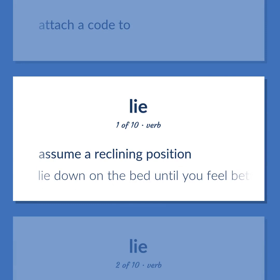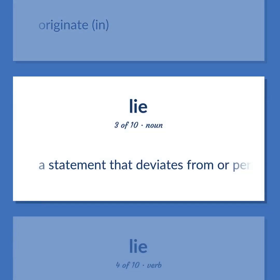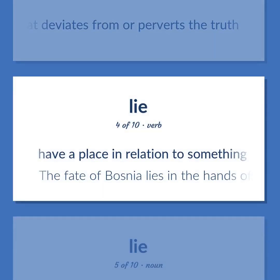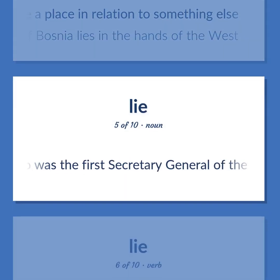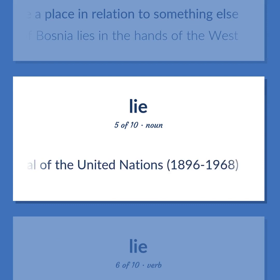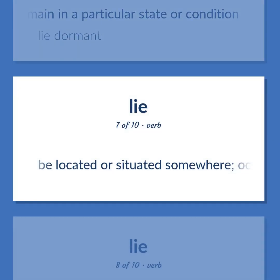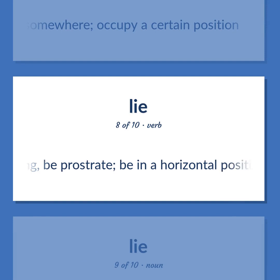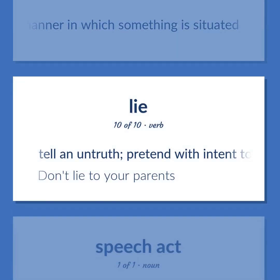Assume a reclining position. Lie down on the bed until you feel better. Originate in. A statement that deviates from or perverts the truth. Have a place in relation to something else. The fate of Bosnia lies in the hands of the West. Norwegian diplomat who was the first Secretary General of the United Nations, 1896–1968. Be and remain in a particular state or condition. Lie dormant. Be located or situated somewhere; occupy a certain position. Be lying; be prostrate; be in a horizontal position. Position or manner in which something is situated. Tell an untruth; pretend with intent to deceive. Don't lie to your parents.